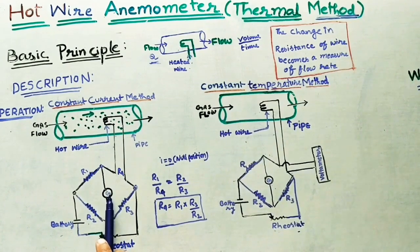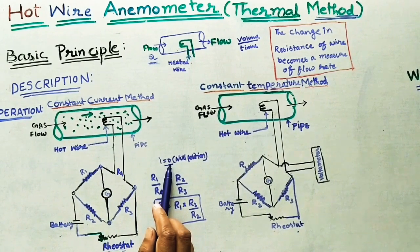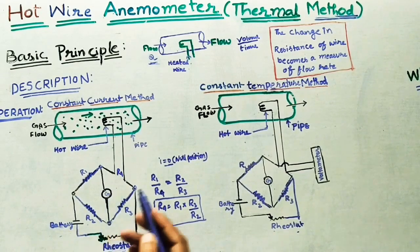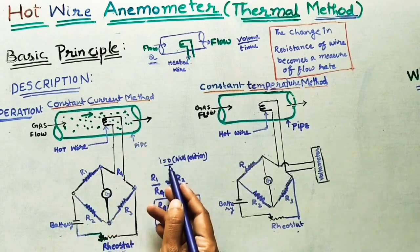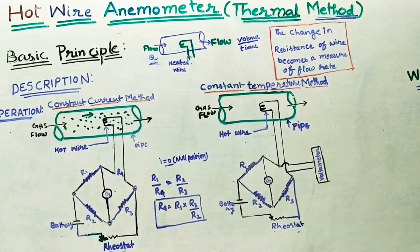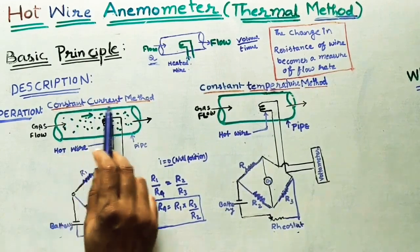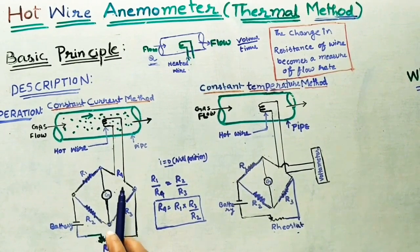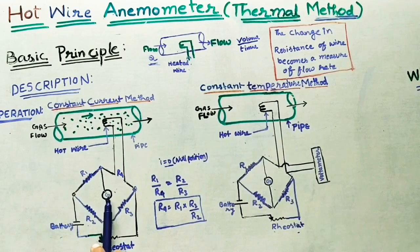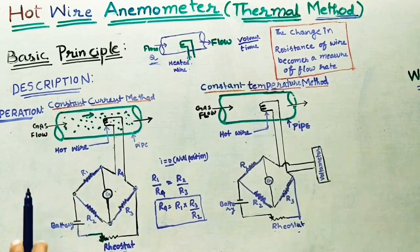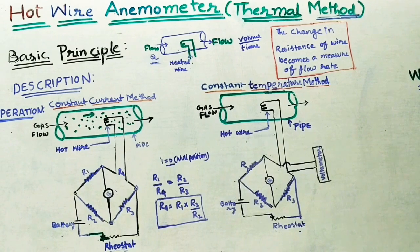Whatever value is coming at the galvanometer — say initially it was 0, and after the temperature drop it shows some value like 3 or 4 amperes — that change in current, for example 4 minus 0 equals 4, will indicate the rate of flow. In the constant current method, we are not changing the supply current; whatever current we set at the null position, we keep it the same. Because of the unbalanced bridge, the galvanometer value changes, and that change in current gives the Q value.